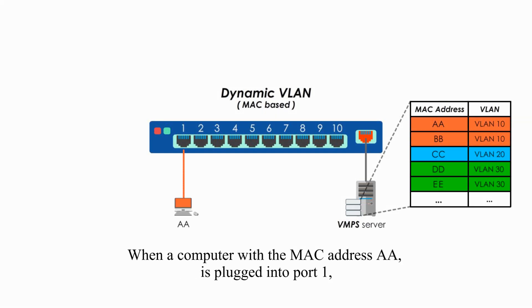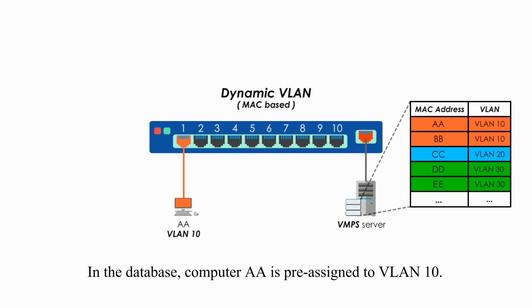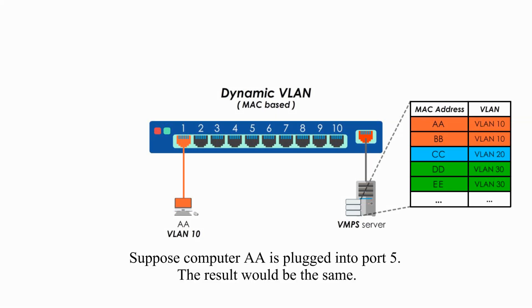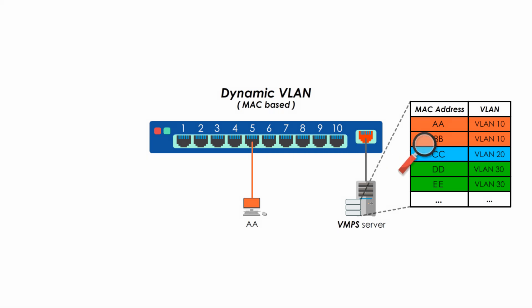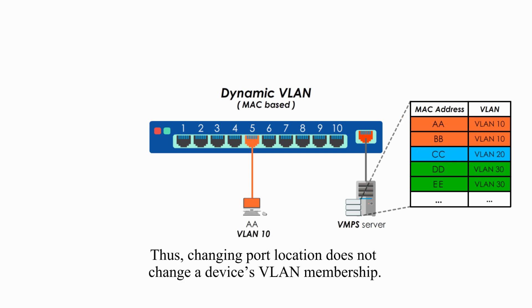When a computer with MAC address AA is plugged into port 1, port 1 will communicate with the server and check against the database for its membership. In the database, computer AA is pre-assigned to VLAN 10. Suppose computer AA is plugged into port 5 — the result would be the same. Port 5 will communicate with the server and find the pre-assigned VLAN to computer AA. Thus, changing port location does not change a device's VLAN membership.